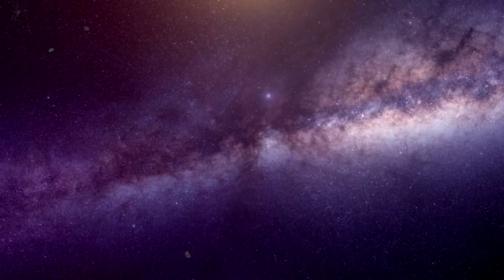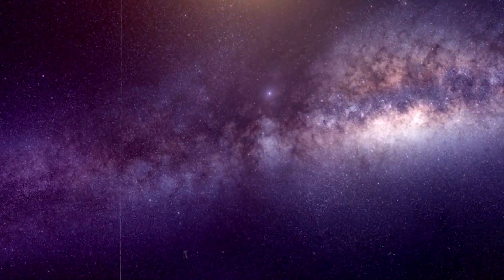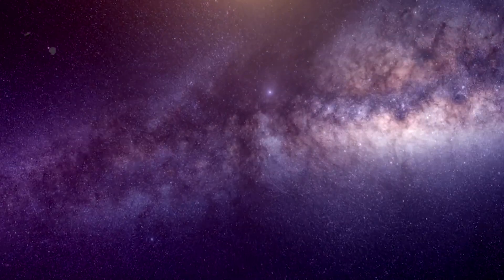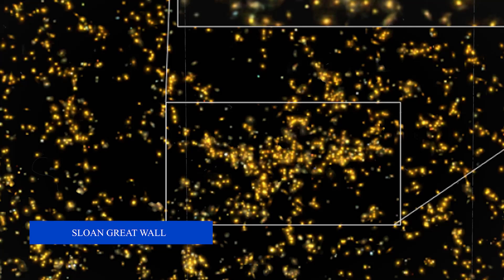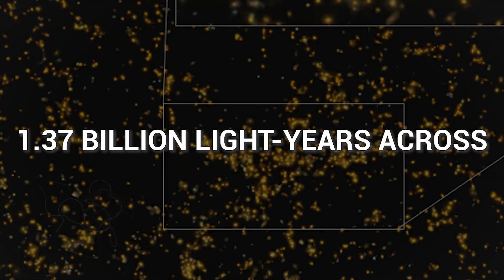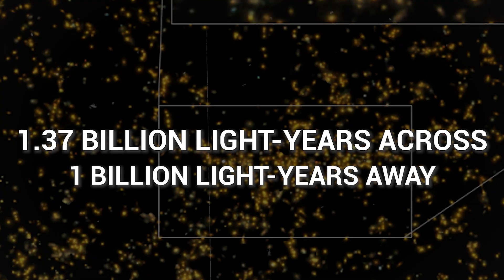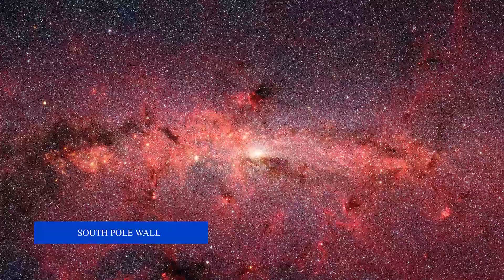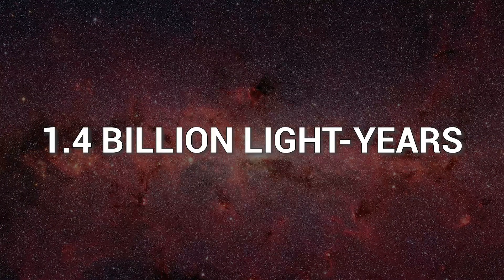To put these superstructures in perspective, the Giant Arc is one-fifth the radius of the entire observable universe. There are other massive superstructures in the universe, such as the Sloan Great Wall, which is 1.37 billion light-years across and approximately a billion light-years away from us. The South Pole Wall of galaxies is a more recently discovered structure measuring 1.4 billion light-years in length.